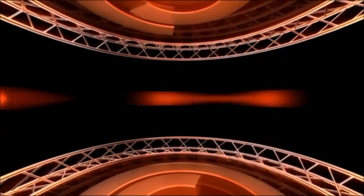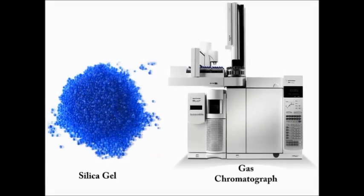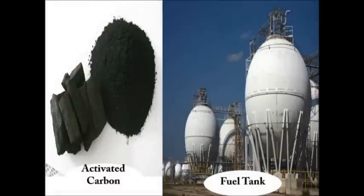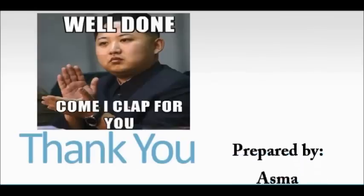For the applications, silica gel is a good example of type 2 isotherm, whereby it is used in chromatography as a stationary phase for separation of mixture. Whereas activated carbon, which is a type 1 isotherm, is used for fuel storage to store certain gases. And that is all for the video.